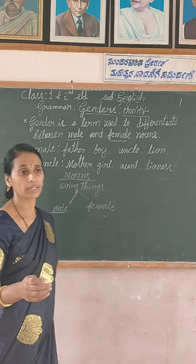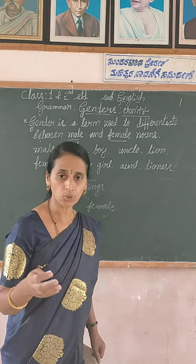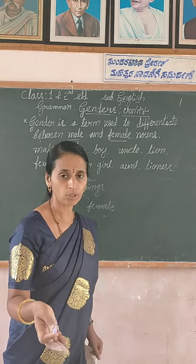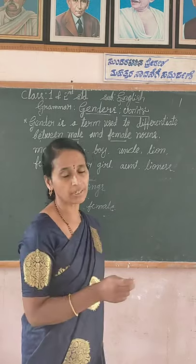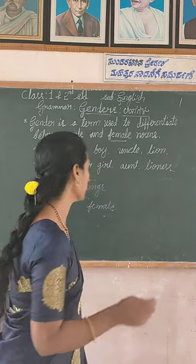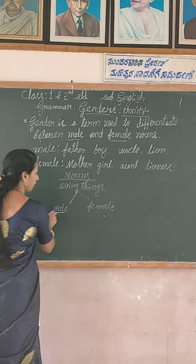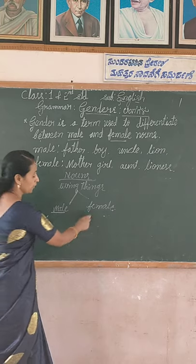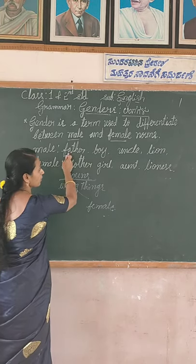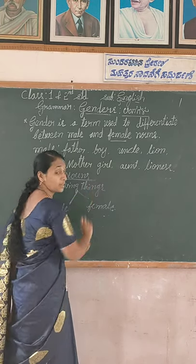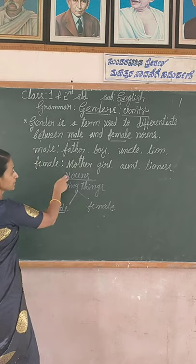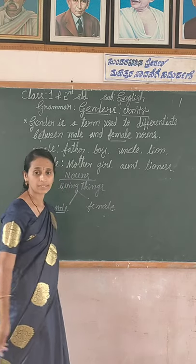In higher studies — second, third, fourth — you will take masculine gender and feminine gender. Male means masculine gender: father, boy, uncle, lion. Female gender is: mother, girl, aunt, lioness.